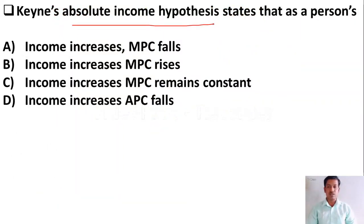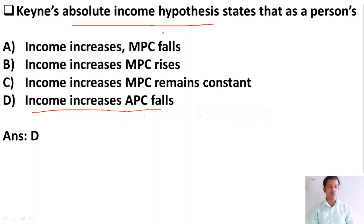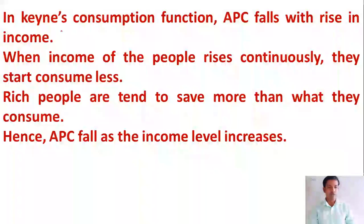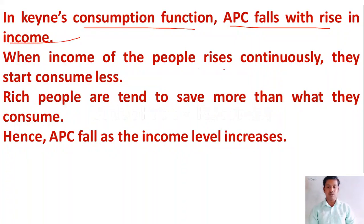The absolute income hypothesis states that as a person's — Option A: income increases, MPC falls; Option B: income increases, MPC rises; Option C: income increases, MPC remains constant; Option D: income increases, APC falls. The right answer is Option D — income increases, APC falls. According to the absolute income hypothesis, when a person's income increases it leads to a fall in the average propensity to consume. As Keynes said, rich people will spend more on consumption but save more too. In Keynes' consumption function, APC falls with a rise in income because when income rises continuously, people start consuming less and saving more.